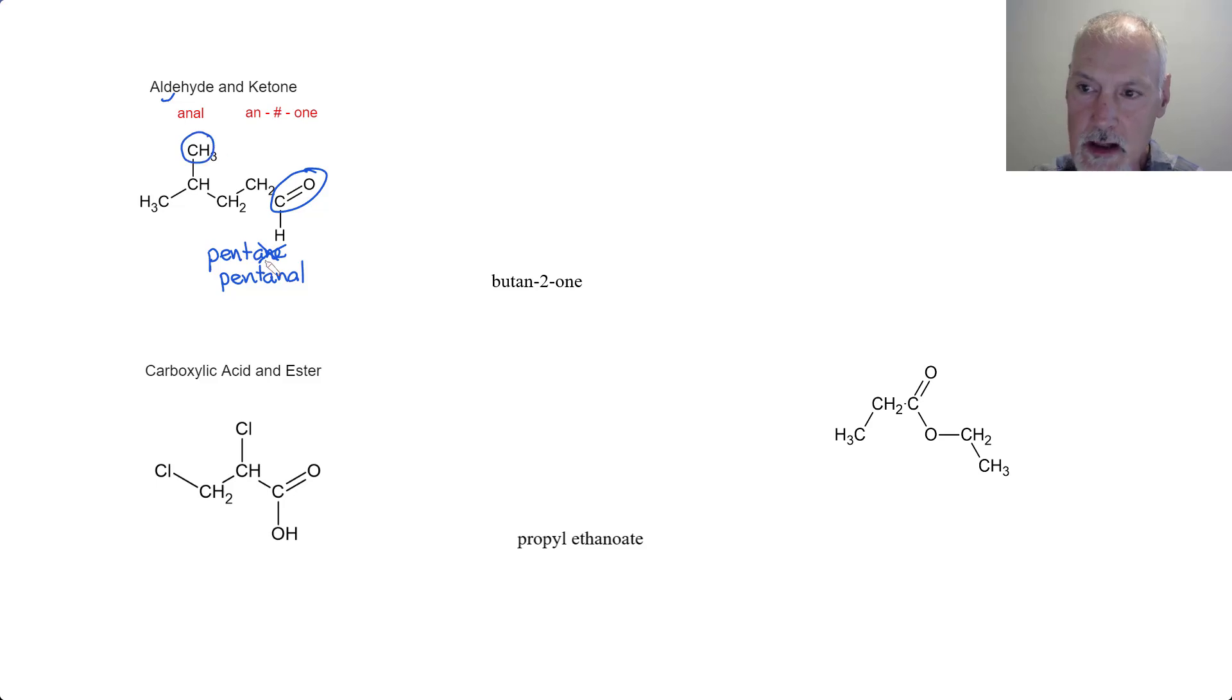So that's named the chain, but I do have this branch that I also need to add. When I'm numbering this chain, I begin at the end closest to the functional group, so that would be this end: one, two, three, four, and five. So this methyl group that we have here, I'd have to add in front at carbon four. So four methyl pentanal.